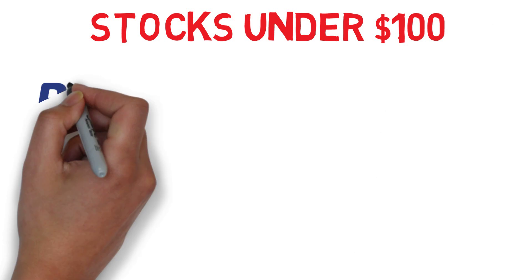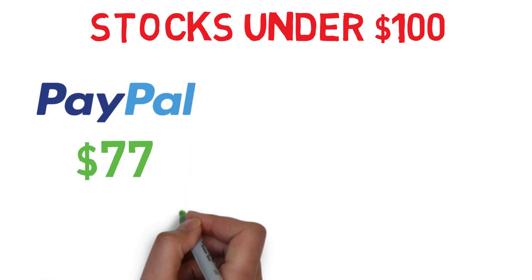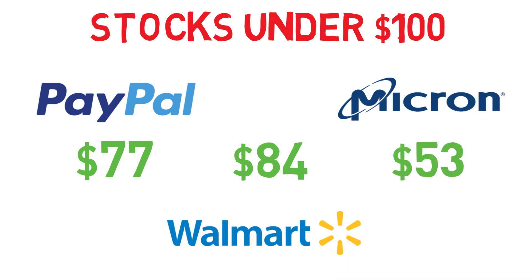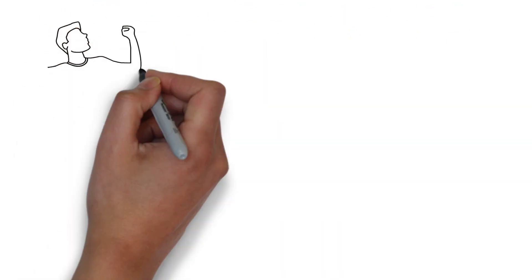If you have a bit more money, you can buy stocks like PayPal at $77, Walmart at $84, or Micron at $53. All good stocks I would invest in. As you can see, stock prices come in many different variations.